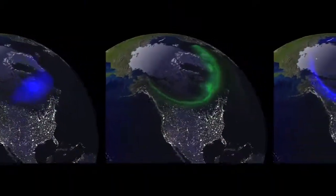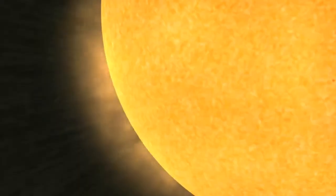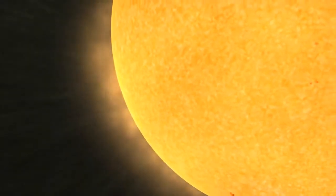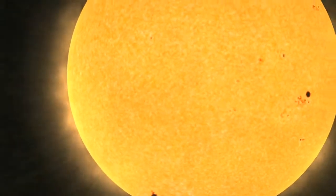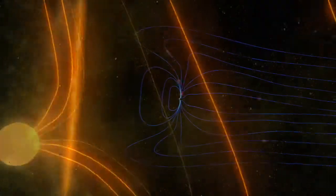Space weather is the environmental conditions outside of our planet, originating from the massively energetic output of the Sun. The solar wind is primarily comprised of protons and electrons. They're streaming outward from the Sun at speeds of up to a million miles an hour, and they are constantly bombarding the Earth's magnetic field.